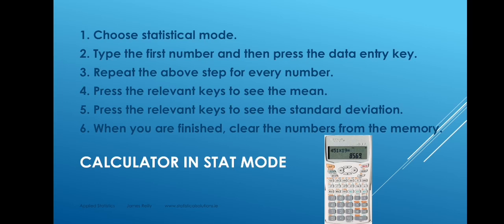Every calculator is different, but the steps you will typically follow are these. First, choose statistical mode, perhaps using a mode function on your calculator. Then begin entering numbers into the statistical memory registers by typing the first number and pressing the data entry key, then the second number and so on until all numbers have been entered. When finished, press the key representing the mean X-bar to see the mean, and the key representing S to see the standard deviation. When done, clear the numbers from memory or choose stat mode or computation mode again to reset your calculator.